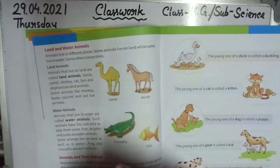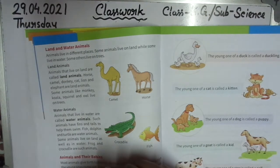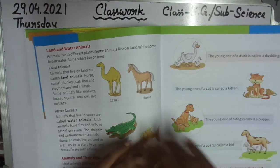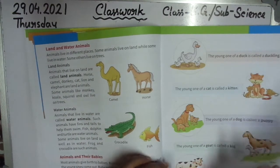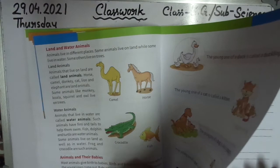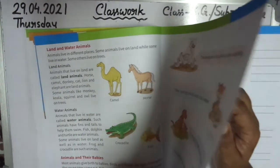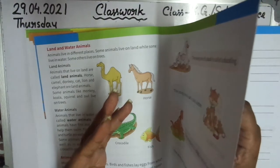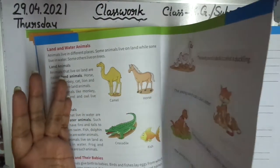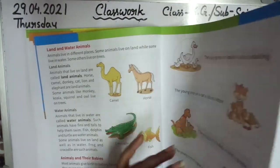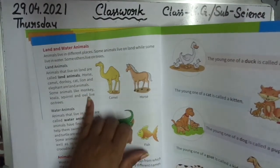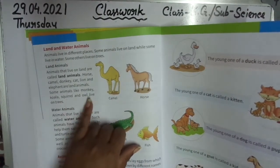Question: What are land animals? Animals that live on land are called land animals. Next question: Name three animals that live on trees. Write monkey, squirrel, owl.